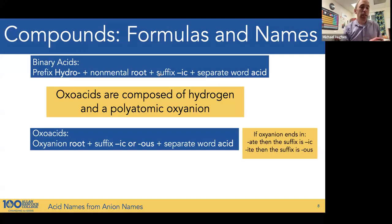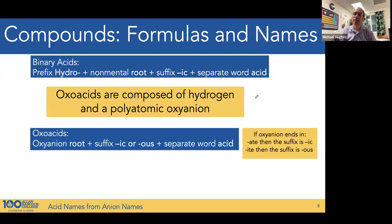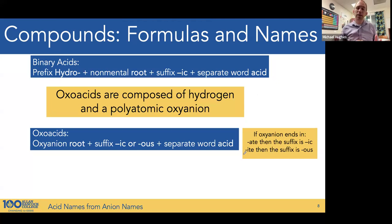The other type of nomenclature category for acids is oxoacids. Oxoacids are composed of the same hydrogen but with a polyatomic oxyanion as the pair. We do not use the hydro prefix for oxoacids. We use the oxoanion's name but change the suffix — polyatomic oxyanions with -ate or -ite suffixes become -ic or -ous respectively.